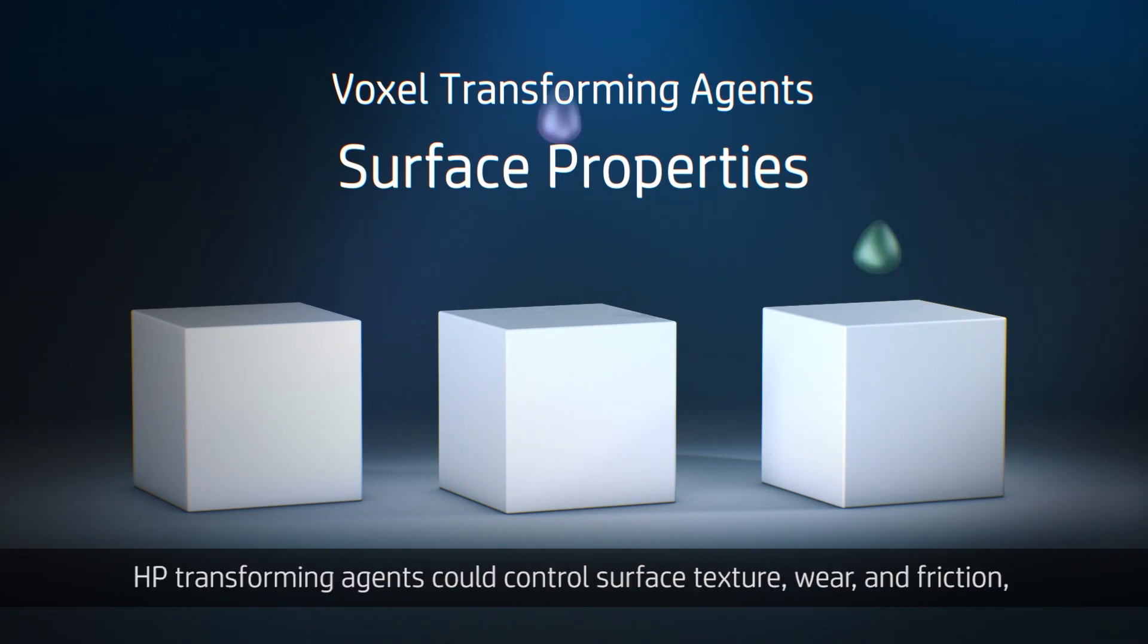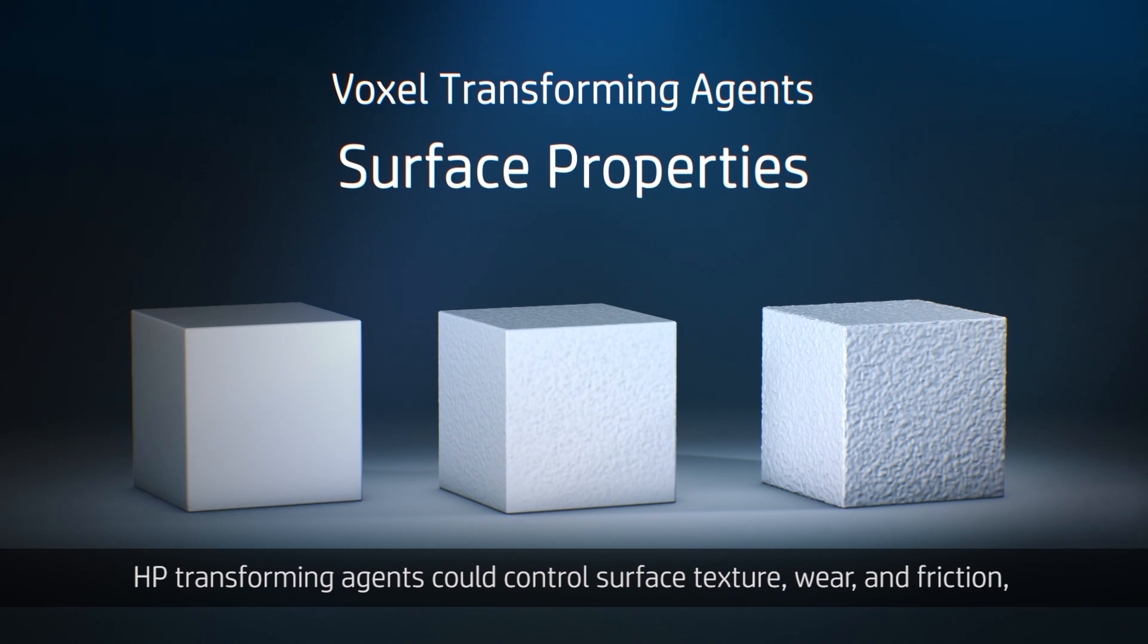At each voxel, HP transforming agents could control surface texture, wear, and friction, enabling single parts with multiple textures, or the monitoring of part performance.